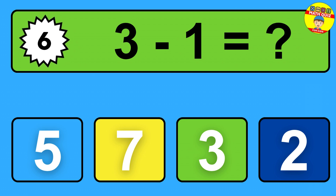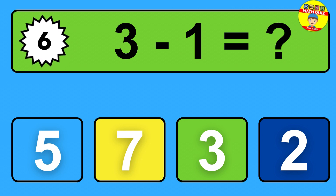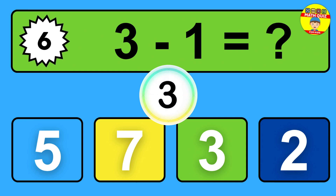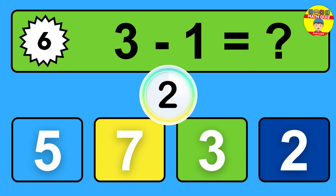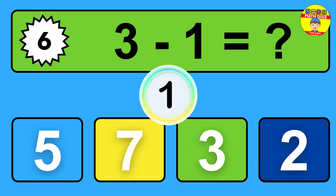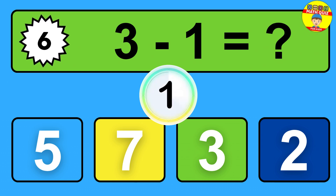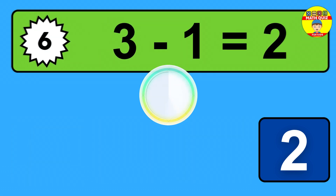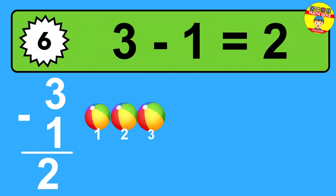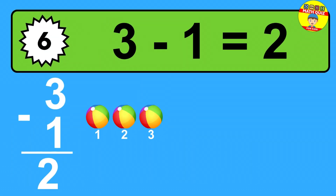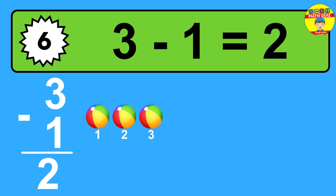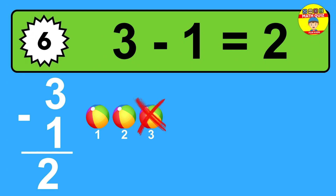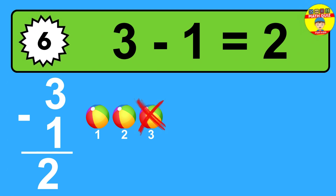Question six: three minus one equals what? The answer is three minus one is two. Let's count it: one, two.